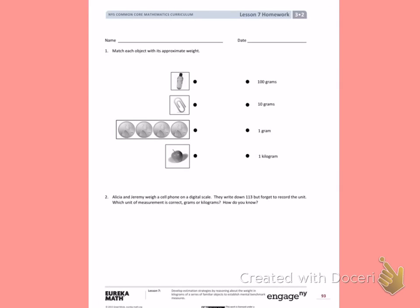This is Module 2, Lesson 7. Today's objective was to develop estimation strategies by reasoning about the weight in kilograms of a series of familiar objects to establish mental benchmark measures.